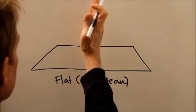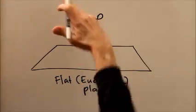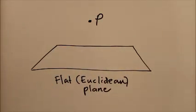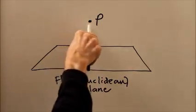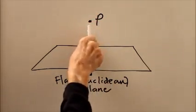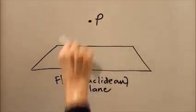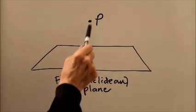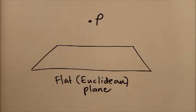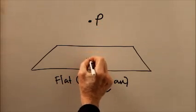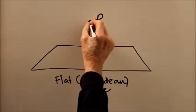Imagine that we can swing lines through this point all around in three dimensions, in the plane here, out, pointing at us, all in any orientation whatsoever in three-dimensional space as long as it runs through that point. How many of those lines are going to pass through this plane at a right angle?